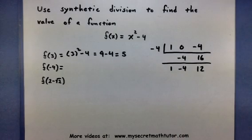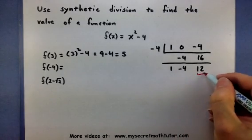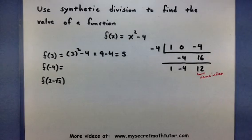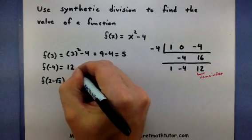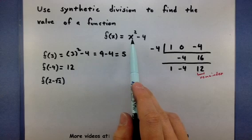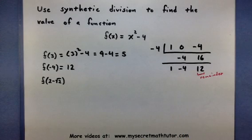Now this remainder term that we get in the end is actually the value of the function. So if you were to plug negative 4 into here, you get 12. And that always happens that way. In fact, you could visually see what happens if you plug in negative 4 and square it. You get positive 16, and 16 minus 4, sure enough, is 12.